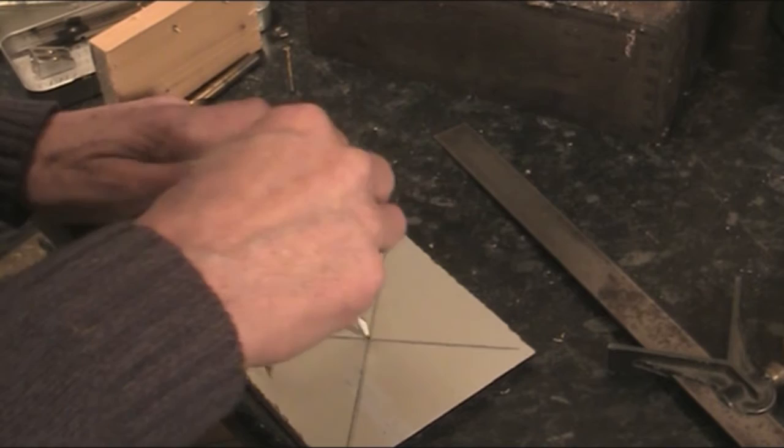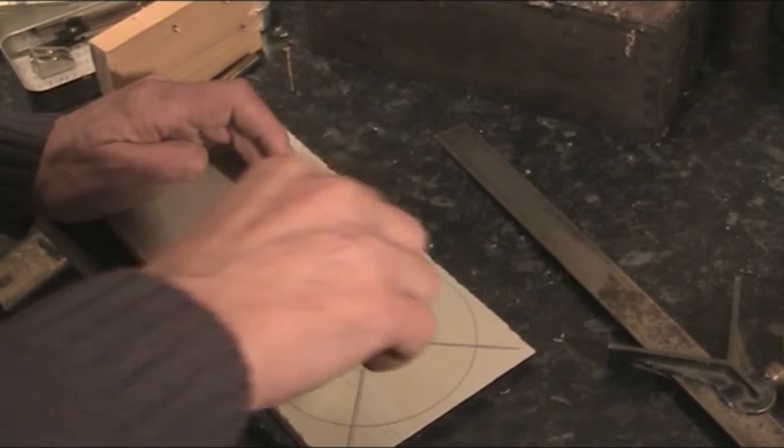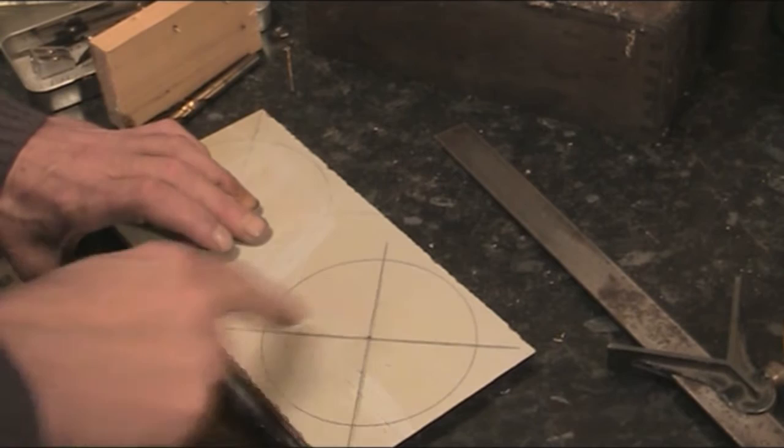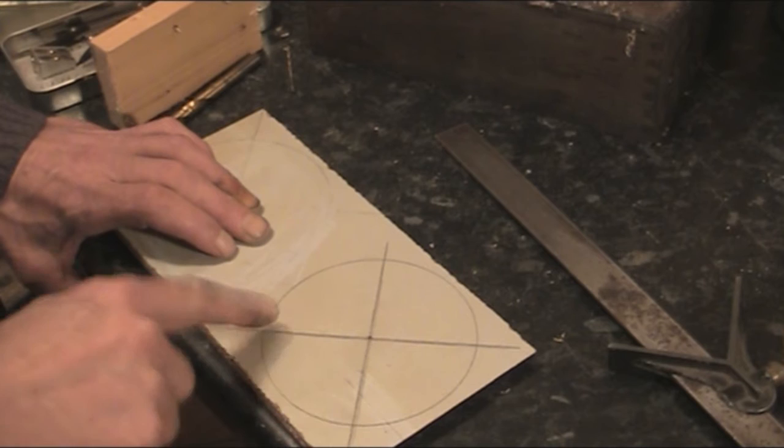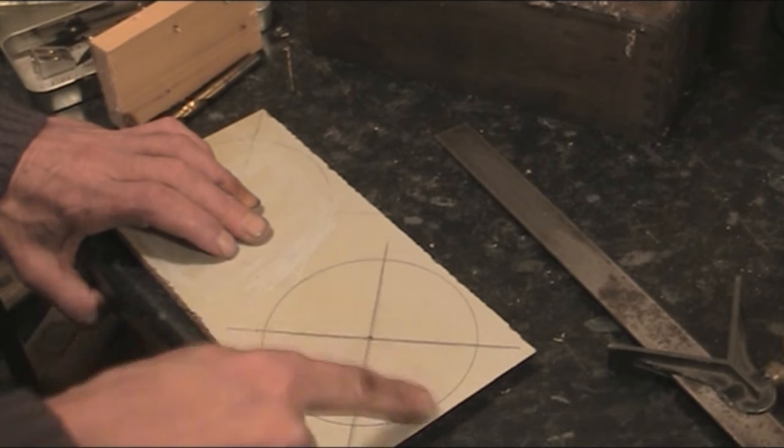Set your compass to the diameter you want. There's your circle. It's quite important to get your cross lines first and make sure they are 90 degrees to each other because these are references for when you draw your bolt holes. If you want more bolt holes then divide up the space accordingly.